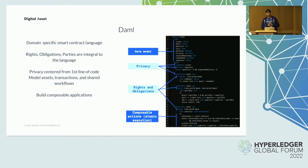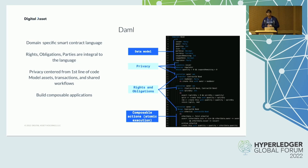DAML is an open-source domain-specific programming language purposely built to create and operate smart contracts. It's a functional programming language which bodes well for implementing atomic transactions that facilitate workflows like DVP — delivery versus payment — and PVP — payment versus payment. It's based on Haskell, a tried and tested functional programming language that's been around for decades.